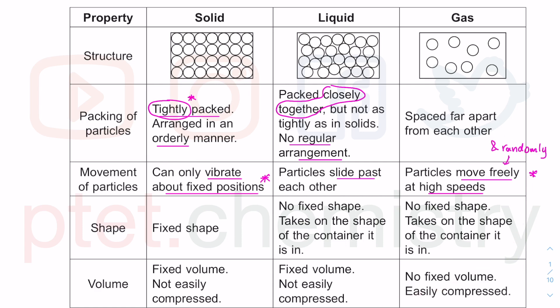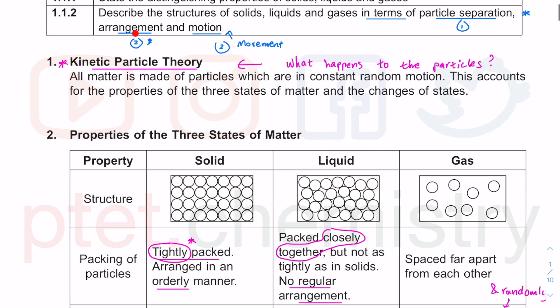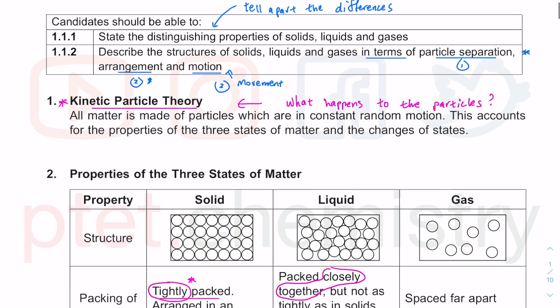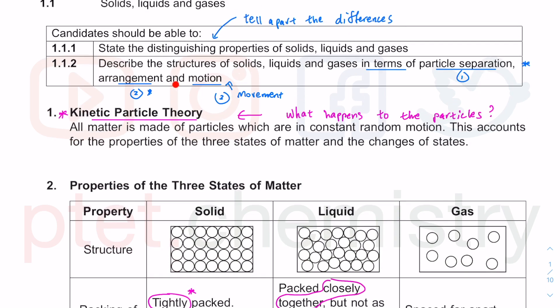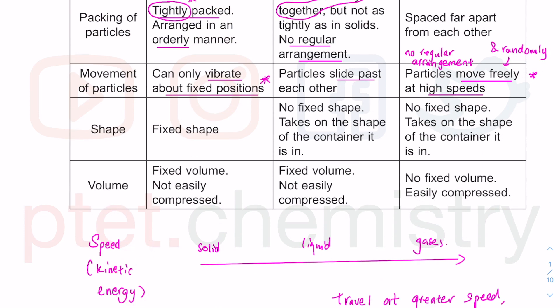Out of all these properties, you must be able to draw the models according to kinetic particle theory, and explain in terms of packing and separation — how far are they separated, how are they arranged (orderly for solids, no regular arrangement for liquids and gases), and also motion — how they are able to move, which relates to their speed and kinetic energy.